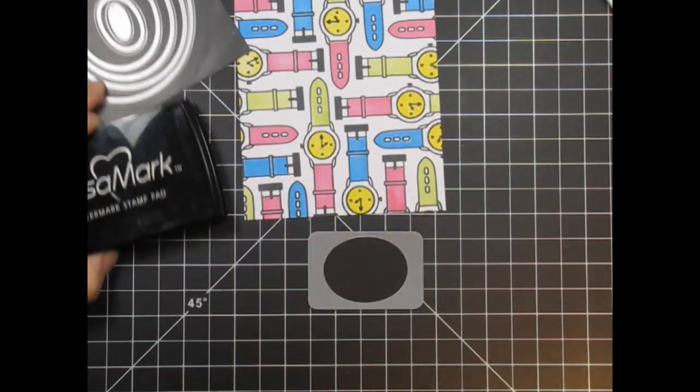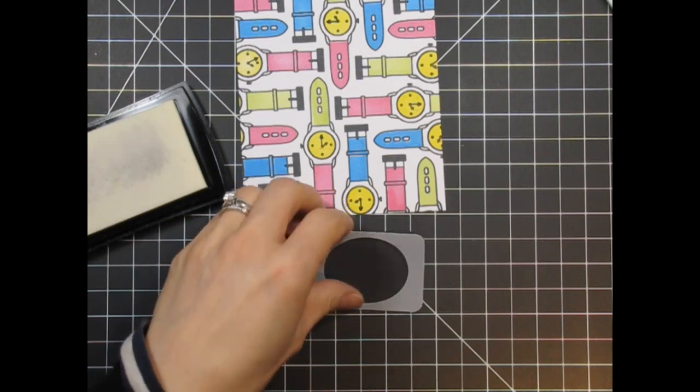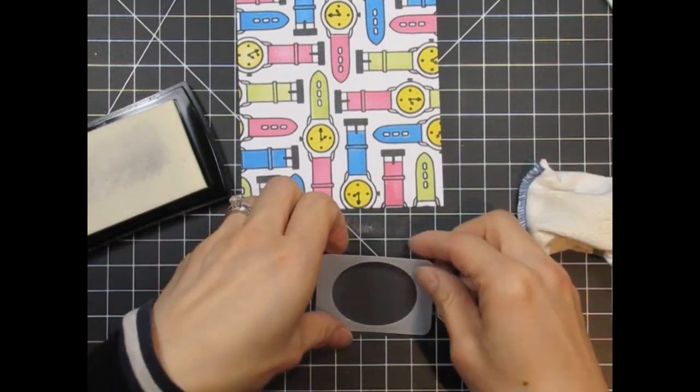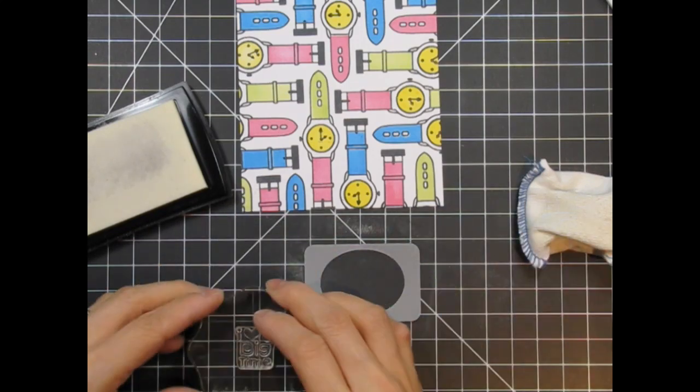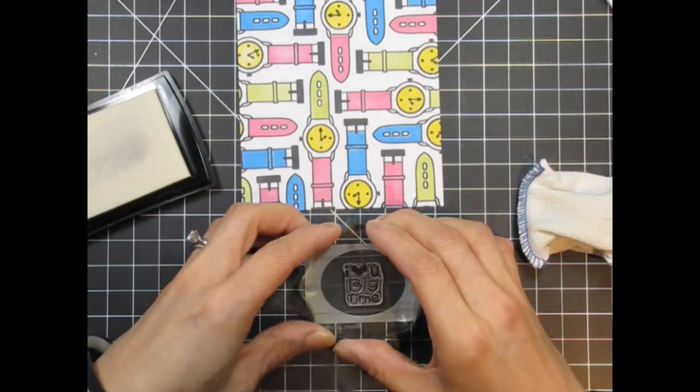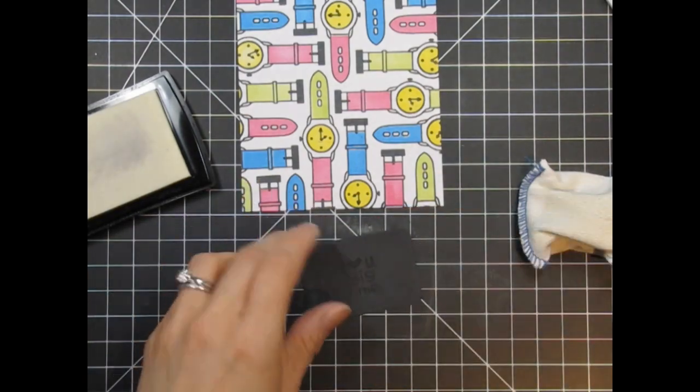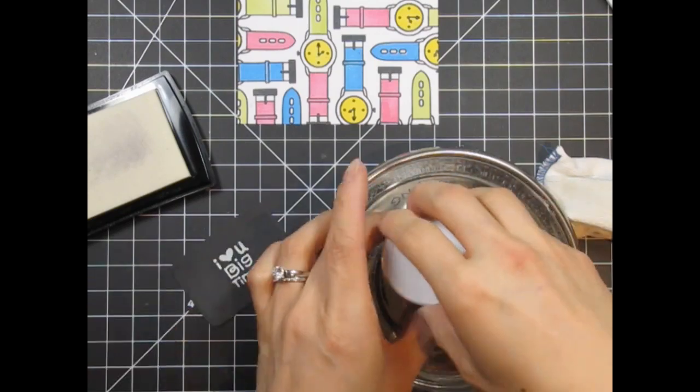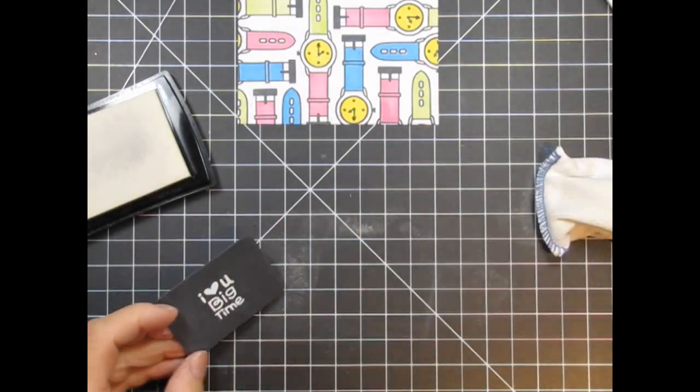Now I can stamp and heat emboss the sentiment onto the black panel. First, I'm going to use the embossing buddy to prevent tiny specks of powder from sticking where I don't want it. Then I add Hero Arts white embossing powder to the ink and apply heat.